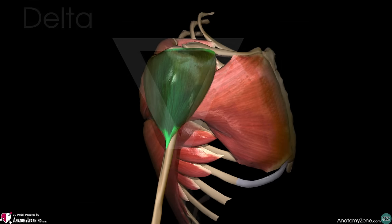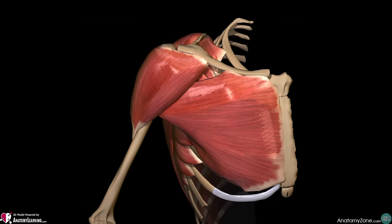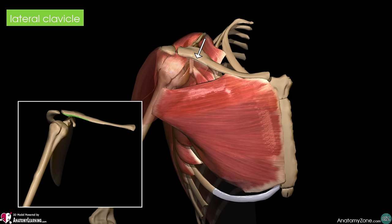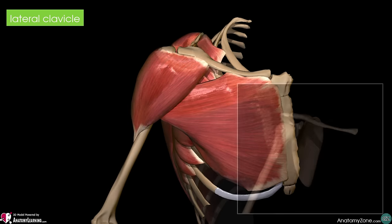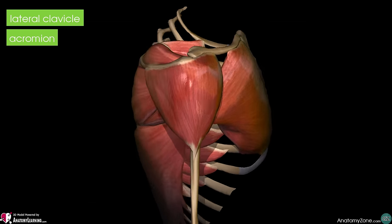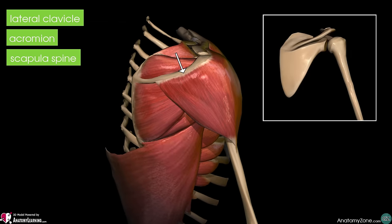Let's take a look at the origins of the deltoid muscle. Anteriorly, it originates from the superior aspect of the lateral third of the clavicle. Laterally, it originates from the lateral margin and superior part of the acromion process of the scapula. Posteriorly, it originates from the inferior edge of the spine of the scapula.